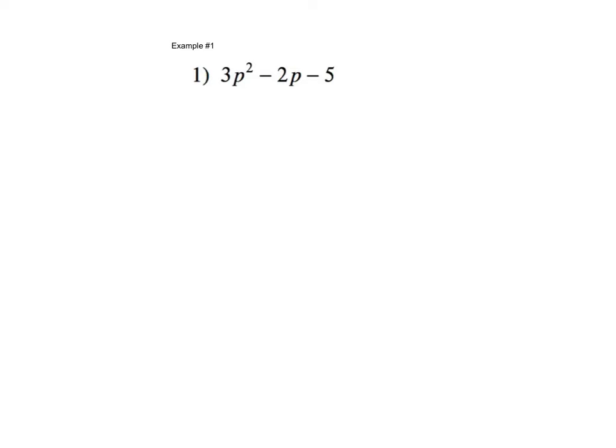Now, we're going to start by doing the leading coefficient times the constant, and that's going to go into the top. So, three times negative five is negative fifteen.